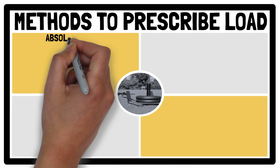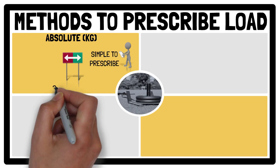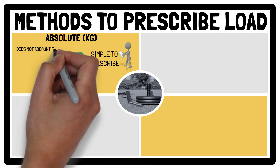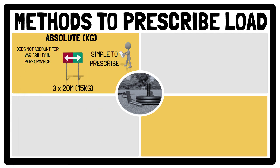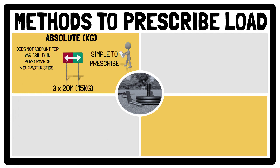Regarding the prescription of sled training load, there are four methods that can be used. Firstly, using absolute load is simple to prescribe — for example, performing 3x20m using a 15kg sled load. However, it doesn't account for the variability in an athlete's performance, i.e. velocity and force production, and characteristics, i.e. body mass, body composition and anthropometrics. Therefore, a 15kg sled load used by two athletes may result in different adaptations, as well as reduce sprint velocity in a distinct manner.